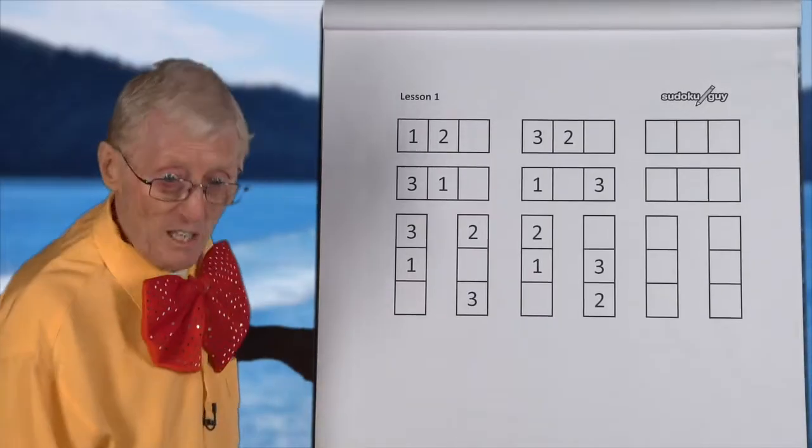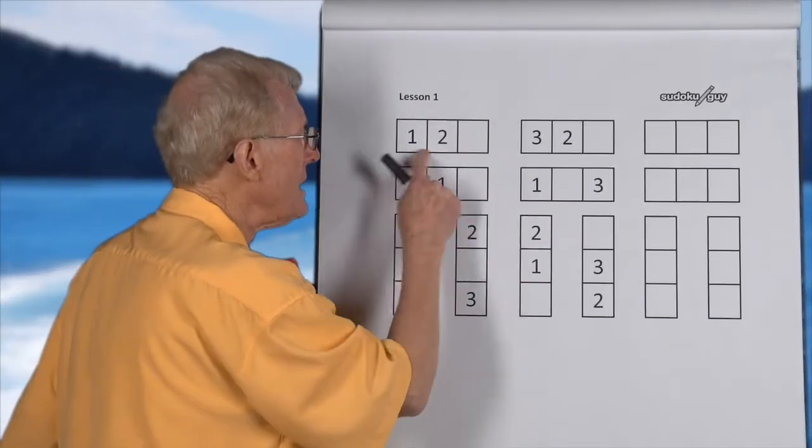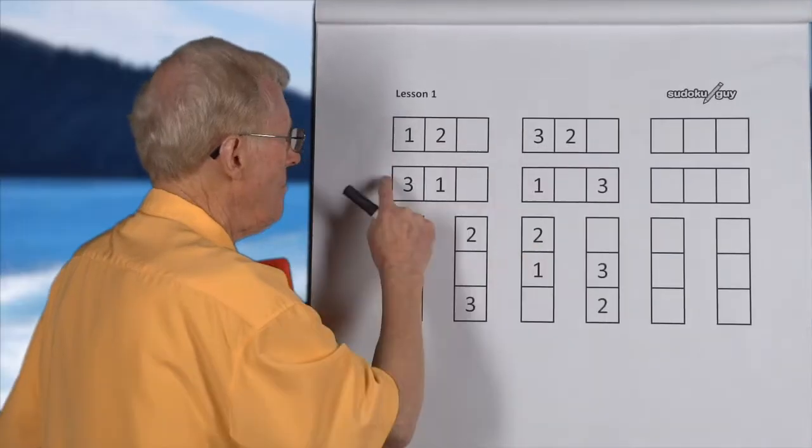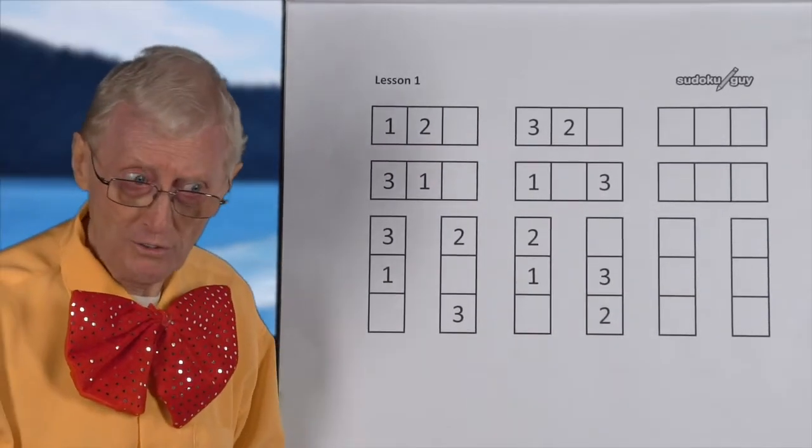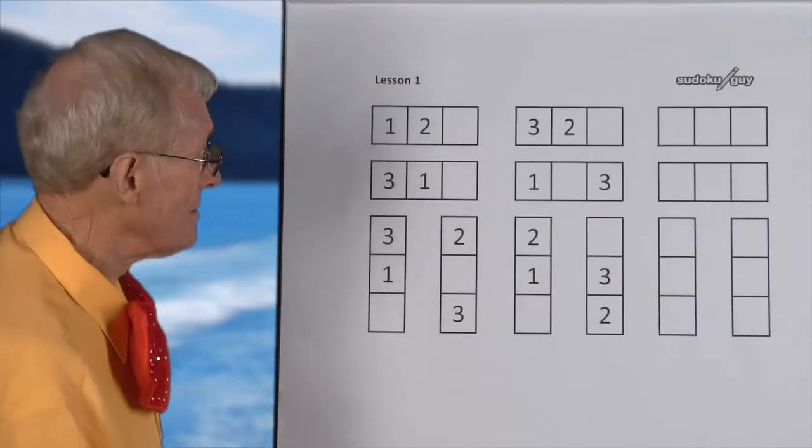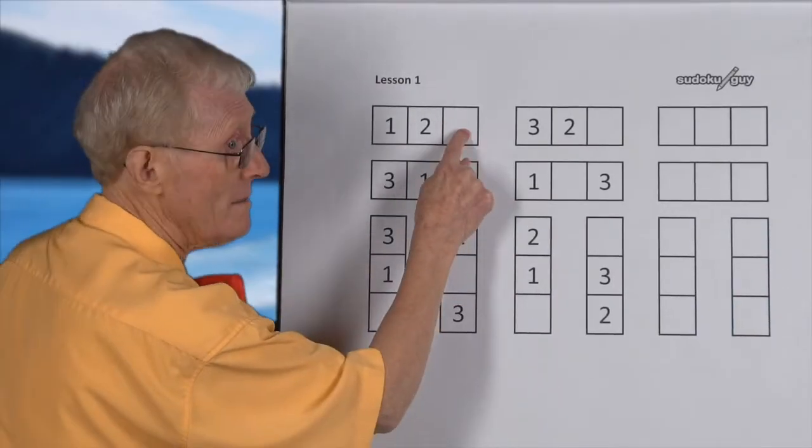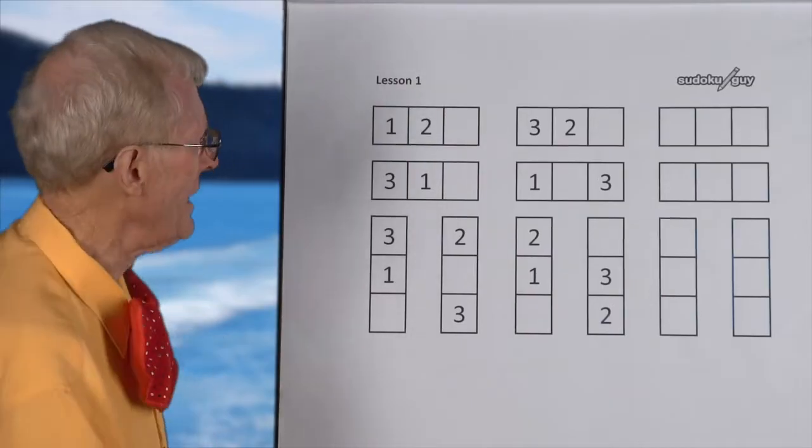This is a bit different. We still have three squares. But there's still a number missing. It could be a one, two or a three. Can you tell me what is missing there? Three. Well, that was easy, wasn't it? Cool. Great.